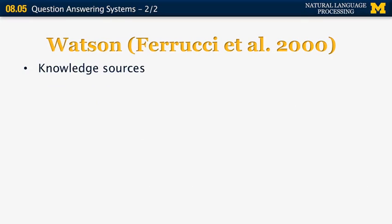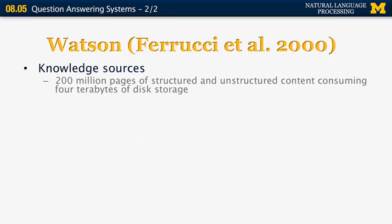What kind of knowledge sources does Watson use? It uses 200 million pages of structured and unstructured content for a total of 4 terabytes of disk storage. This includes things like Wikipedia, other encyclopedias, dictionaries, and news articles. It also includes things like WordNet and other knowledge representation sources.